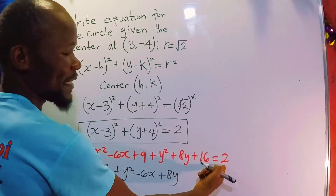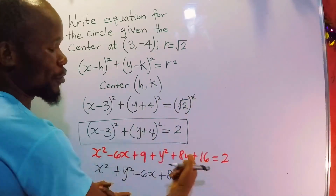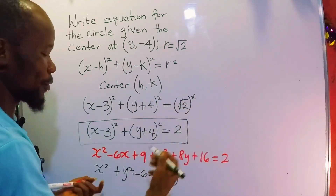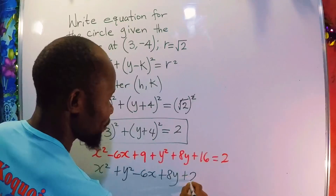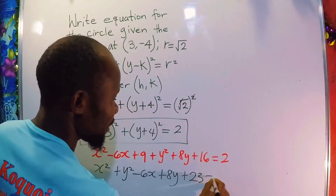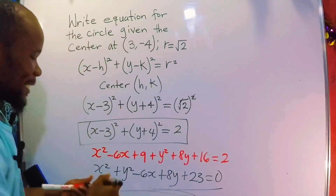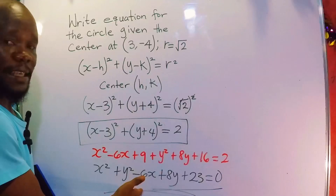So combining: x squared plus y squared minus 6x plus 8y. Now 9 plus 16 gives us 25. When you move 25 to the other side, 25 minus 2 gives us 23. So you have x squared plus y squared minus 6x plus 8y plus 23 equal to 0. This is the standard form.